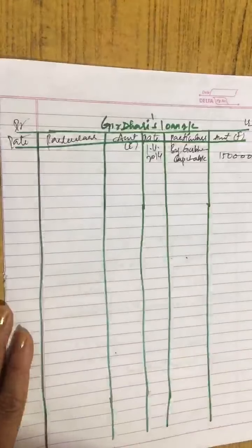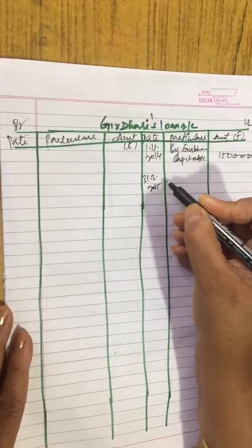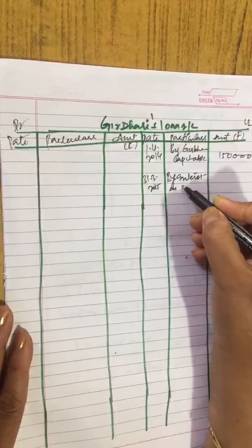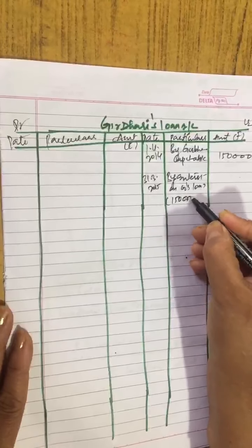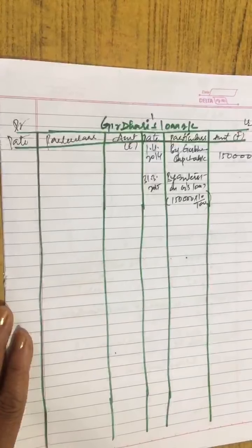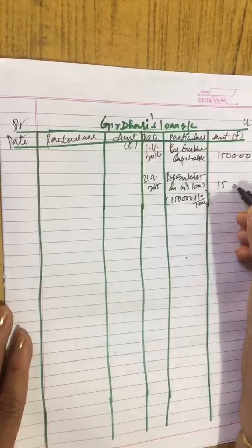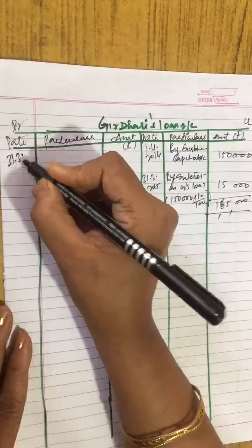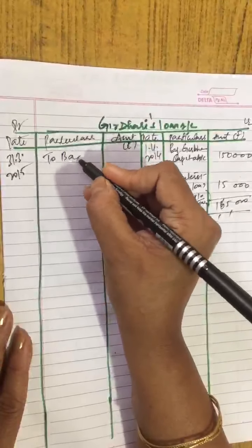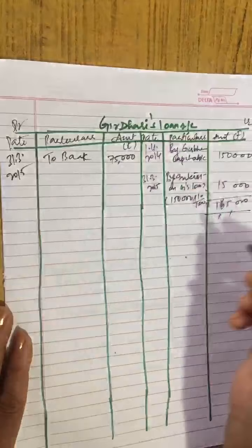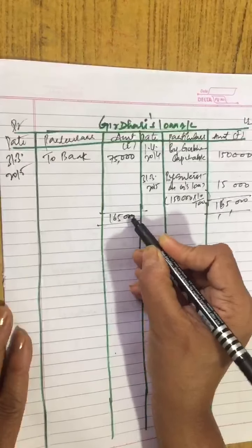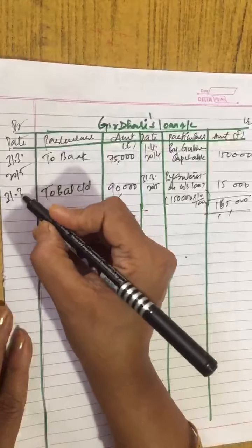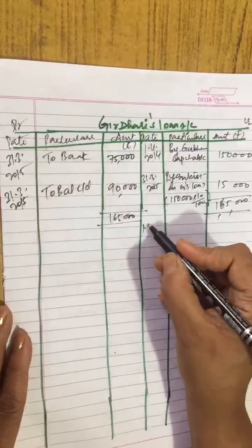Now we have to pay this on 31st March 2015. On this we have to give interest at 10% per annum. By interest on Girdhari's loan 1,50,000, if you calculate 10%, this becomes 15,000. So now you will pay how much? Total becomes 1,65,000. But my child, you will pay how much right now? To bank total payment is 75,000 which already includes interest.